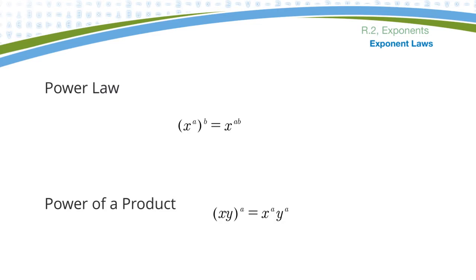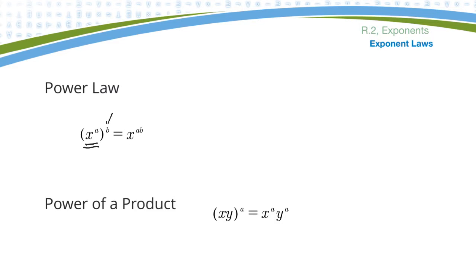Here's another two laws. The power law: if I have an expression that has an exponent in it and then I raise that to an additional exponent, the rule is I can multiply those two exponents together. So if I have x to the third all squared, that's the same as x to the three times two, or x to the sixth.